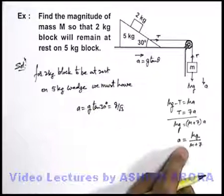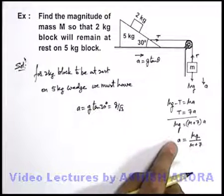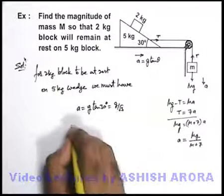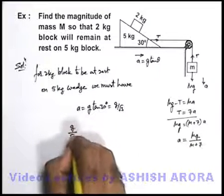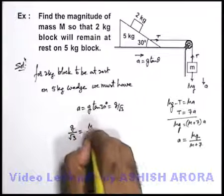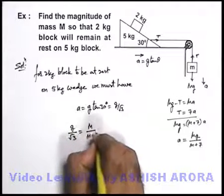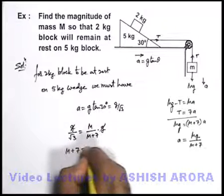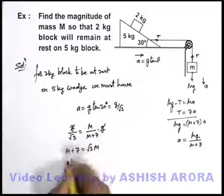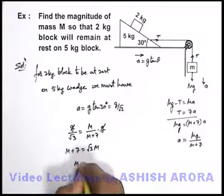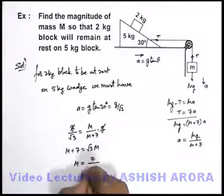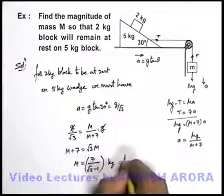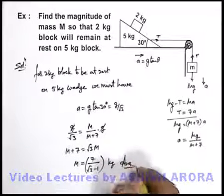As we have already got the value of acceleration by solving the equation of motion, we can equate the two to find out the value of M. Here we are having g by root 3 is equal to m by m plus 7 into g. Here g gets cancelled out and we'll be getting m plus 7 is equal to root 3 m, or directly the value of M we can get as 7 upon root 3 minus 1 kilogram. That will be the answer which we are required to evaluate.